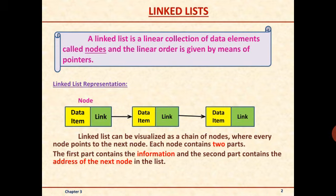A linked list has various nodes, and each node contains two parts. The first part is called information, and the second part is the address of the next node. In the diagram, we can see that every node — there are three nodes — is connected to one another. Every node has two fields: one is the link field and the other is the data item. Data item means the information part, and link means the address of the next node.